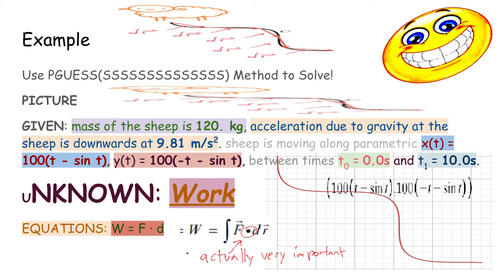The sheep is moving along the parametric x of t is 100 times t minus sine t, and y of t is 100 times negative t minus sine t, between times t equals 0 and t equals 10. Find work. And we can use the equation w equals the integral of F dot dr to find that.